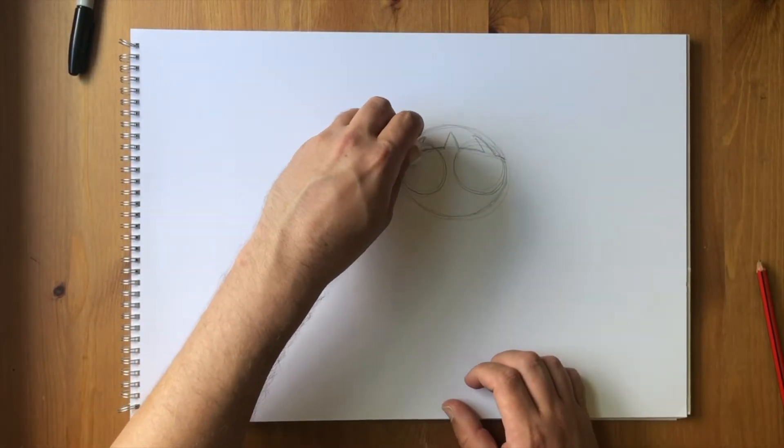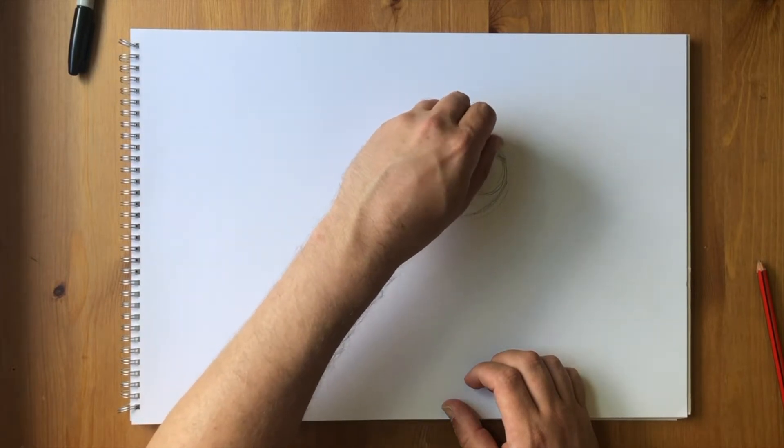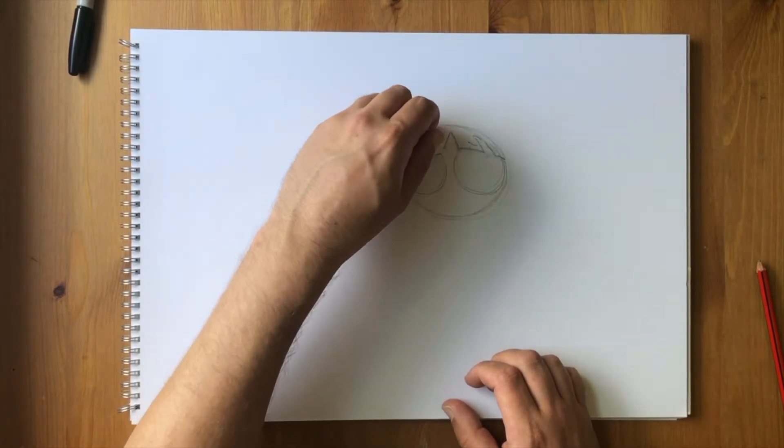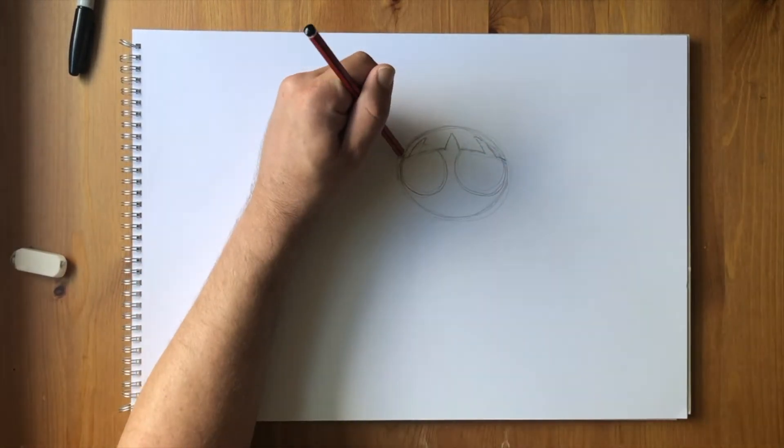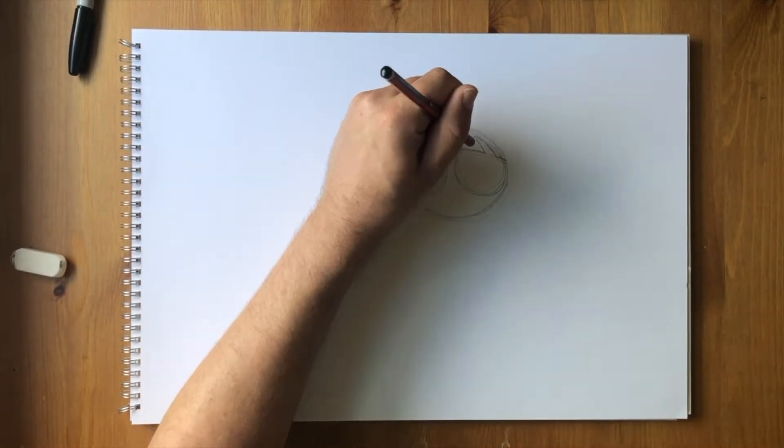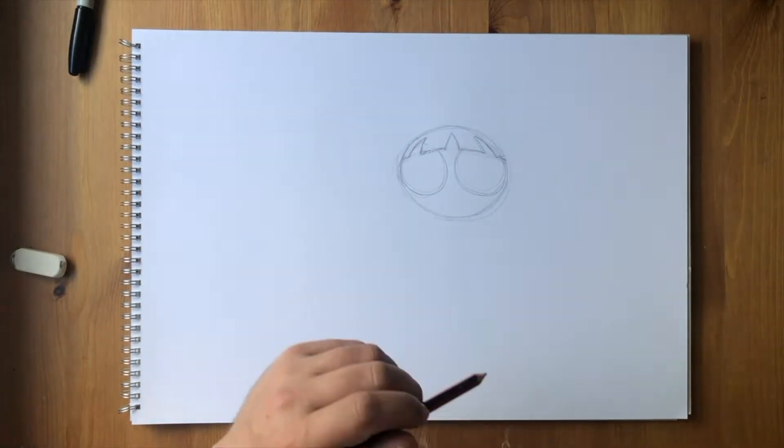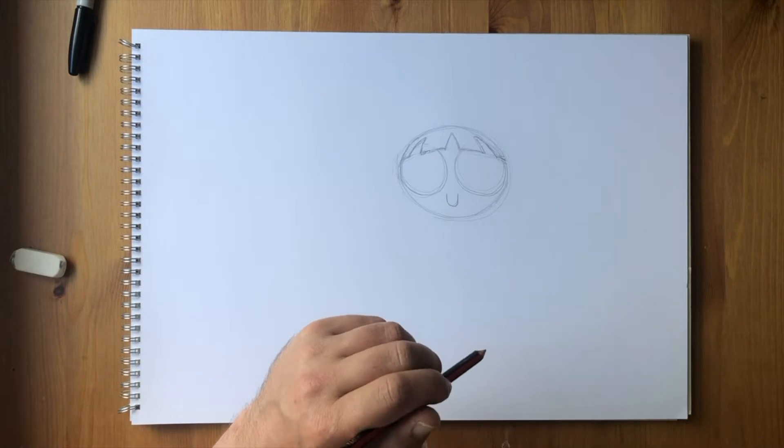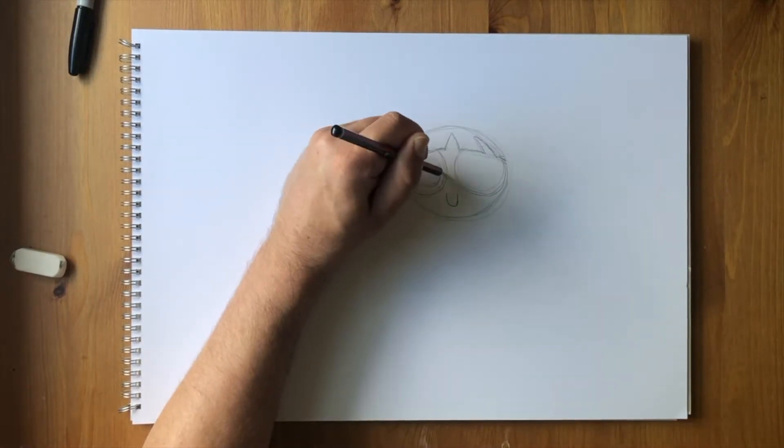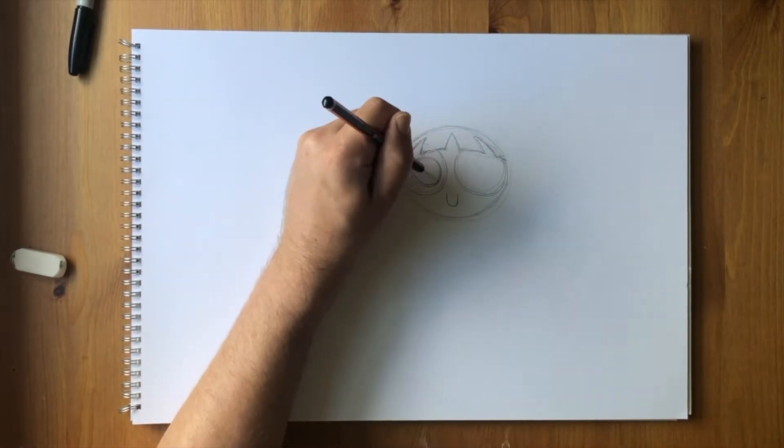You may need to use your eraser to rub out any lines you don't need like this. A tiny u-shaped smile down below, then some details in the eyes. Nice wide pupils in each.